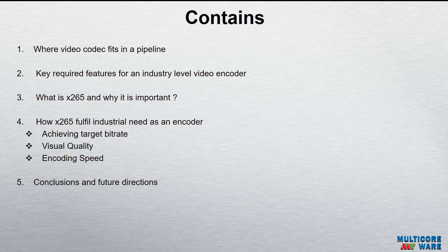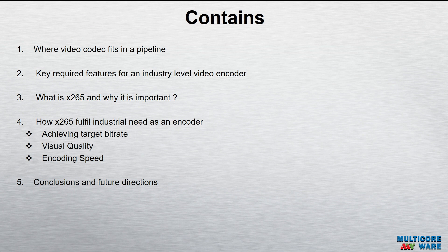In this session, I will cover mainly three things. First, a brief overview of what an industry-level encoder means, the key requirements for it, and where the video encoder fits in the video pipeline. Next, what x265 is and why it's important. After that, how x265 fulfills all these industry standards across three key areas. And finally, my conclusions and future work in this region.